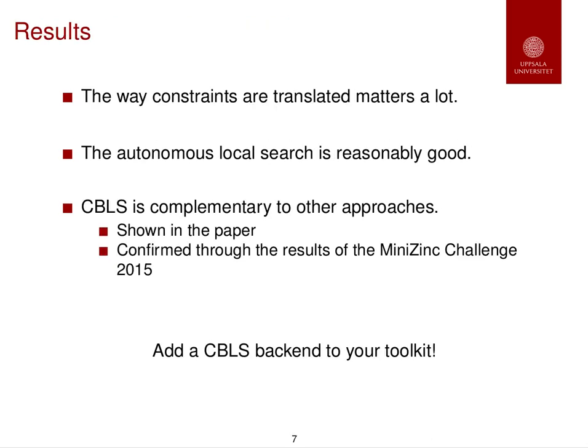Now, rapidly, a few results. First, the way constraints are translated matters a lot. Our autonomous local search has been shown to be quite good. And most importantly, constraint-based local search is complementary to other approaches. This has been shown in the paper, but also in the results of the MiniZinc challenge this year. You should add a CBLS backend to your toolkit, because some problems that cannot be solved with complete methods can be solved very easily with local search.